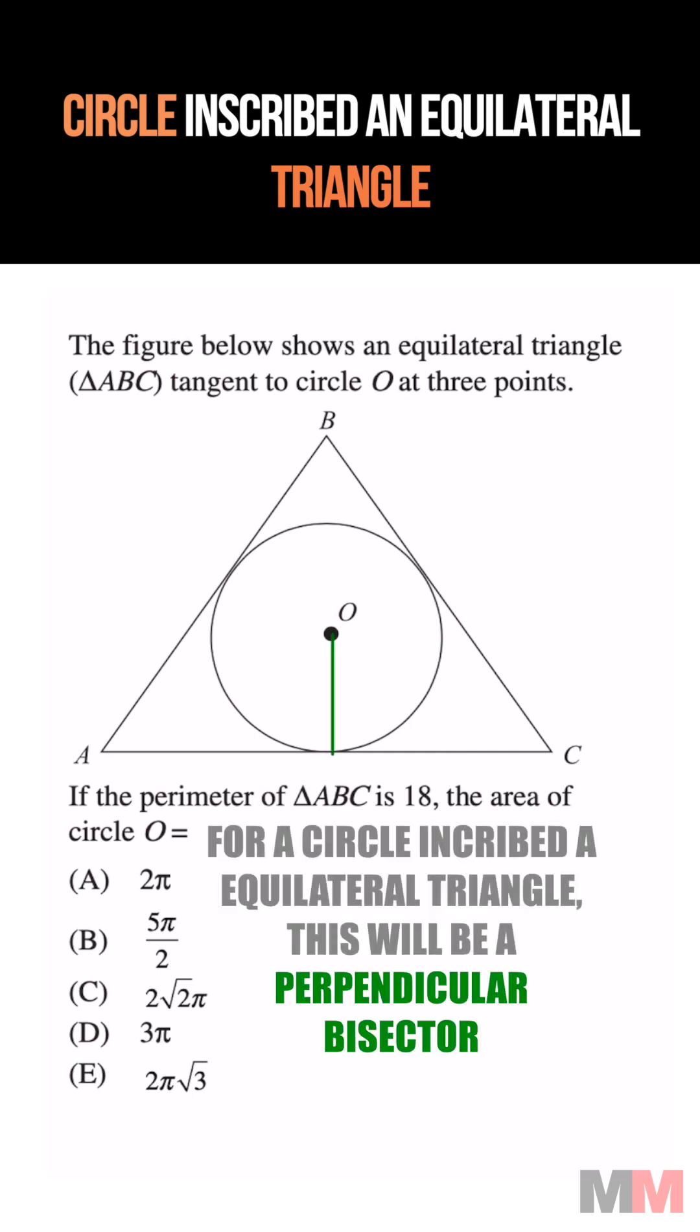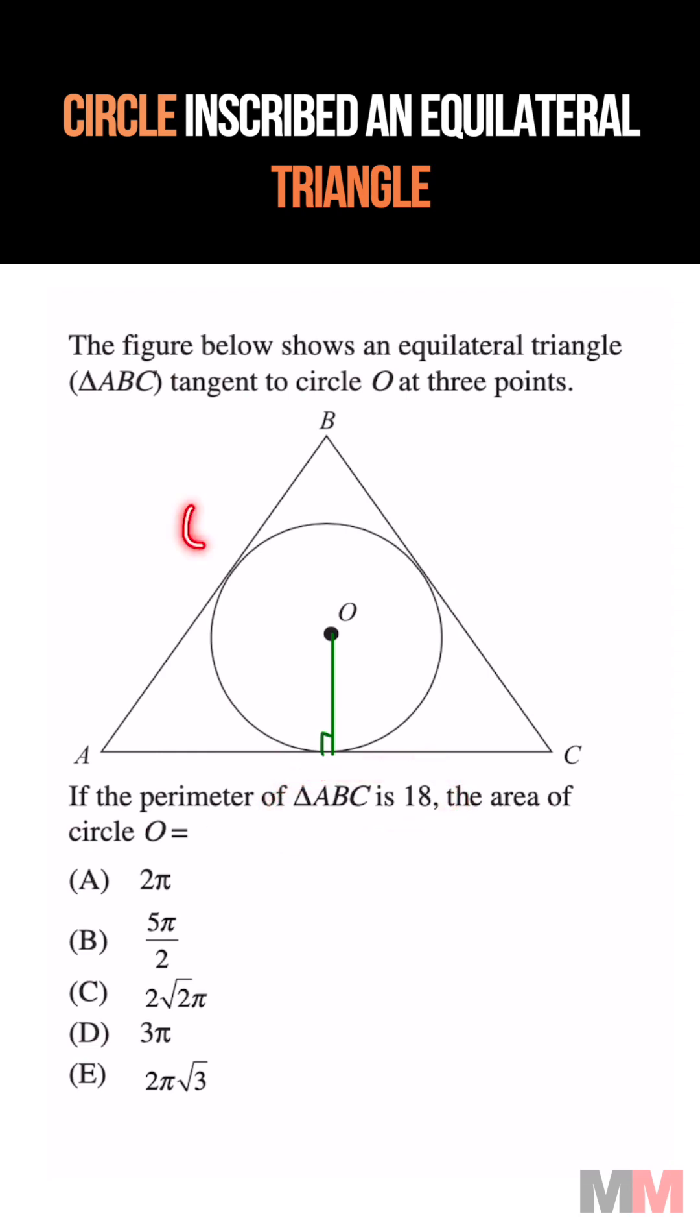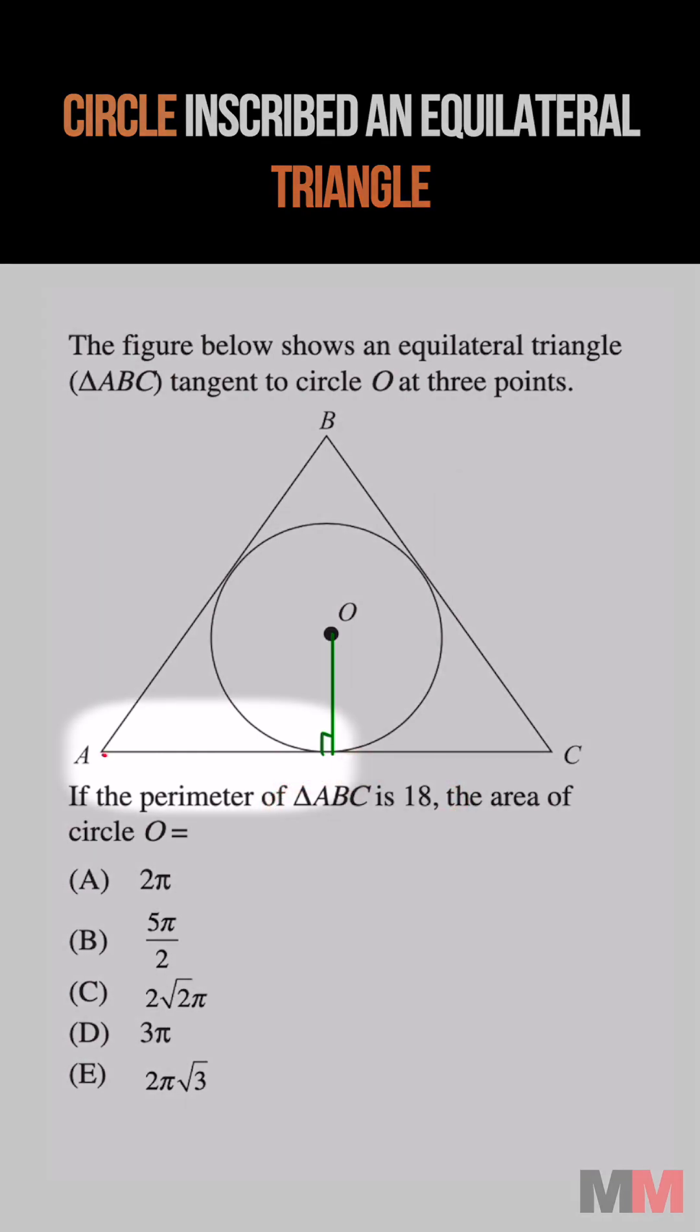Draw the radius. That's also going to be a perpendicular bisector. Since the perimeter of that triangle is 18, each side is going to be 6, meaning that this length right here is going to be 3.